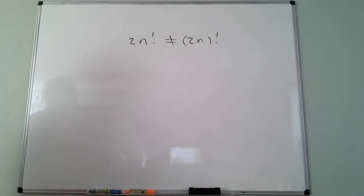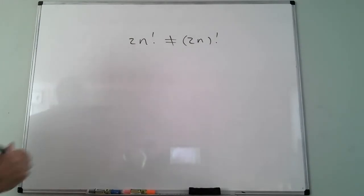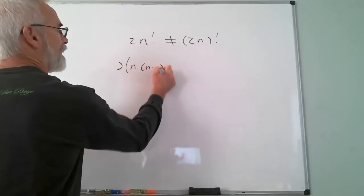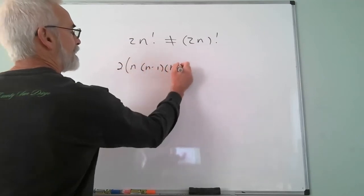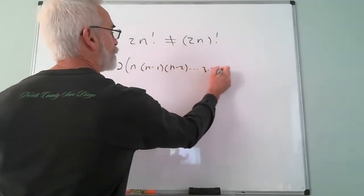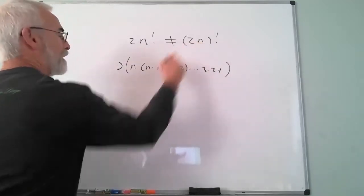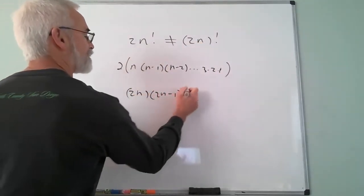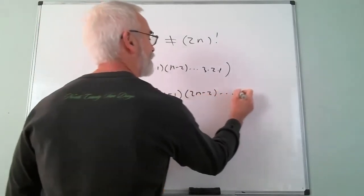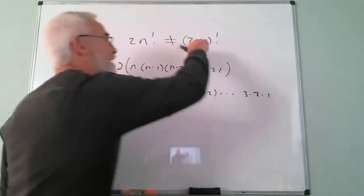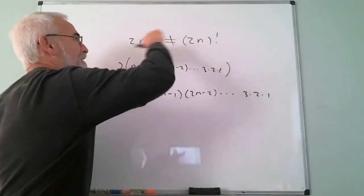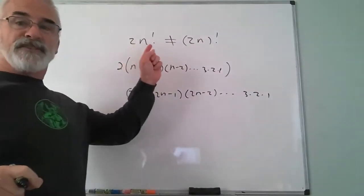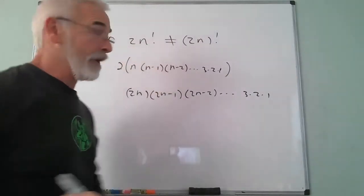That's a pretty egregious error. 2·n! means 2 times n times (n−1) times (n−2) down to 1, whereas (2n)! means 2n times (2n−1) times (2n−2) down to 1. You cannot factor out a scalar like that — it has no meaning mathematically.